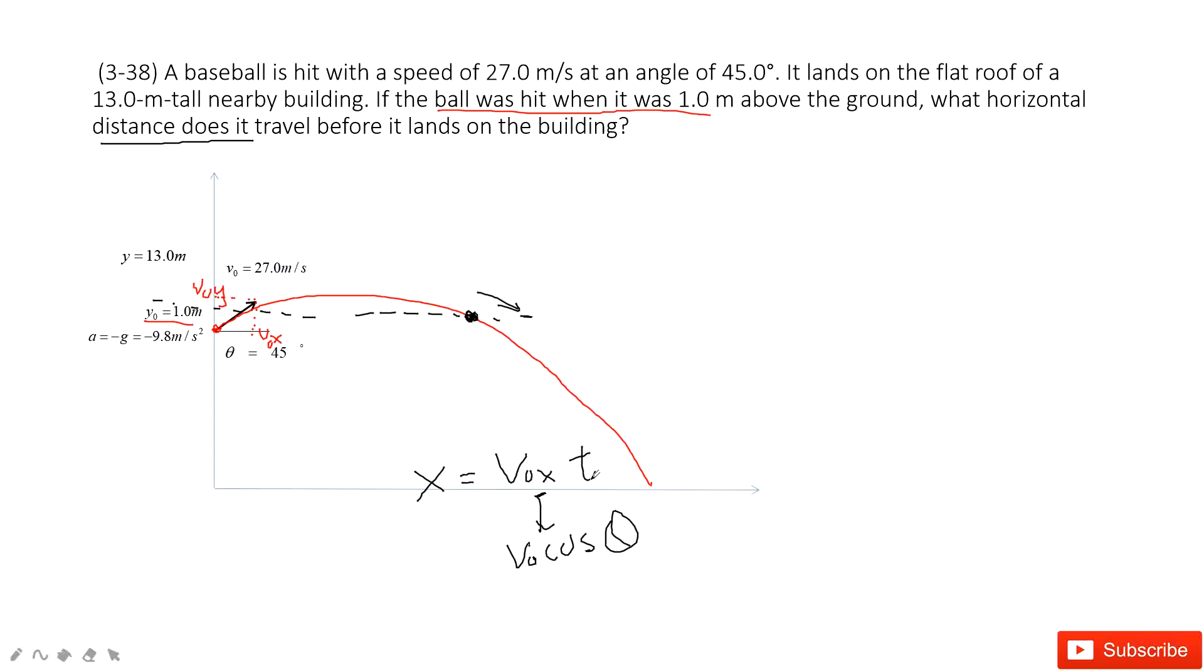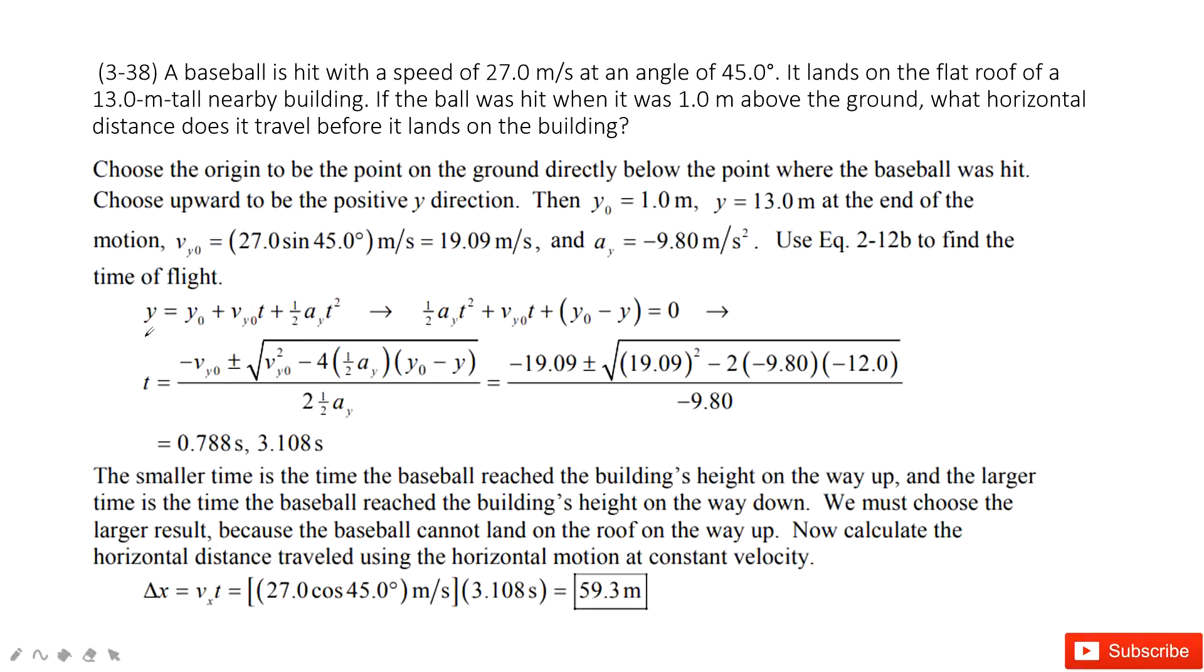The most important thing is, we need to find the t, the time. And we consider the y component. So we can see, on the y component, you know the initial position, and you know the final position. You also know the acceleration, and you know the initial velocity at the y component. Can you get the time t? Yes. Super easy. We consider this equation. And when we consider this equation, we can see the initial velocity at the y component, v_y0 is v_0 times sine theta. So this one can be gotten, right? And acceleration is negative g. And this one is 1 meter is given, and the final position is 13 meters. So we can solve this equation to get the time t.